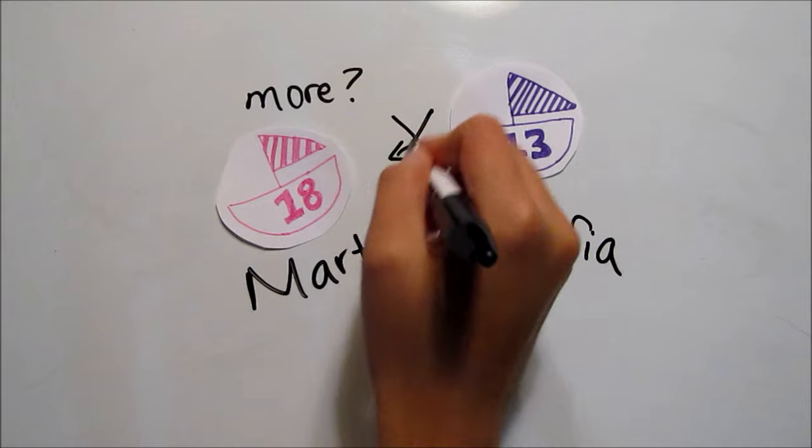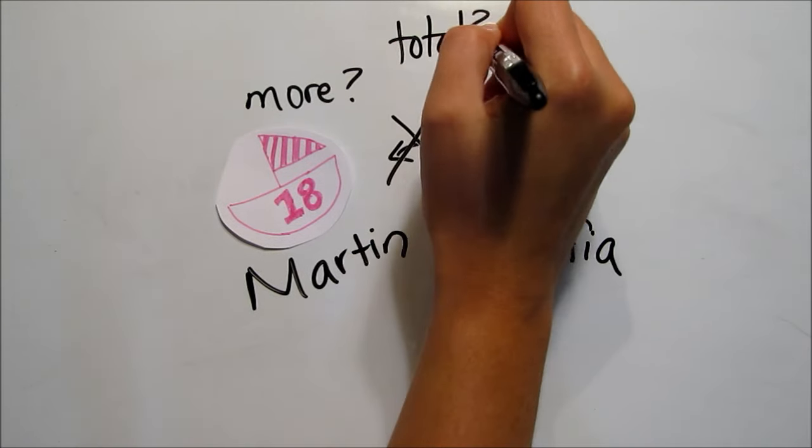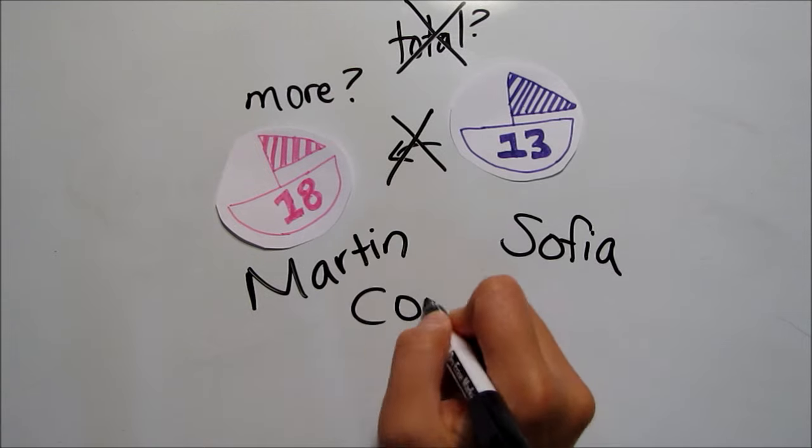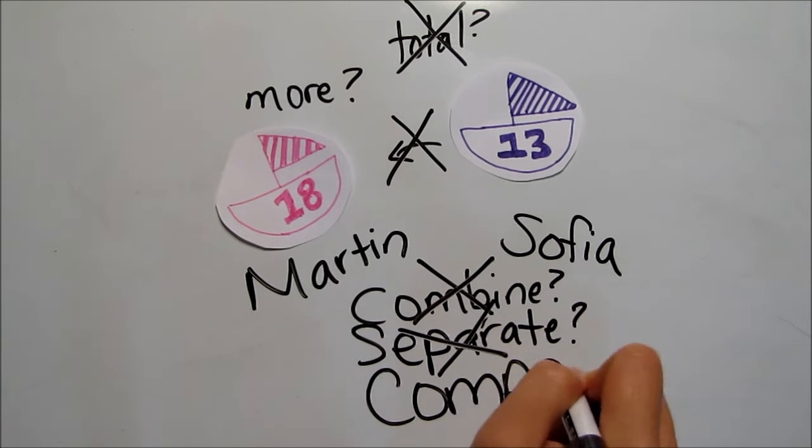Sophia's 13 boats are not part of Martin's 18, and we're not trying to find the total number of boats they have together. We're not going to combine them. We can't separate them because they were never together. What we're going to do is compare them.